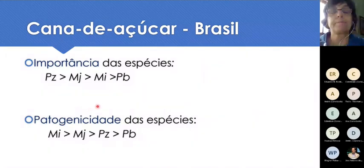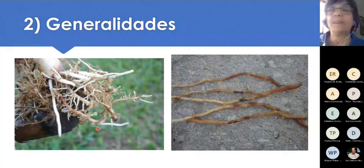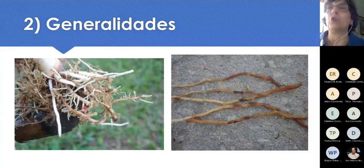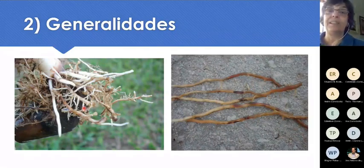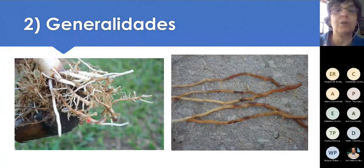Esses nematóides atacam o sistema radicular. Os nematóides do gênero Meloidogyne produzem galhas, que são deformações nas raízes, encontradas em todo tipo de raiz — nas emitidas pelo tolete e nas emitidas pelo perfilho. Mas nem sempre a gente encontra desse jeito. É até raro encontrar raízes de cana com sintoma tão nítido do ataque de Meloidogyne, com as galhas tão visíveis. Muitas vezes as galhas estão dentro das raízes grossas da cana e passam despercebidas. Então, podemos ter problemas com Meloidogyne mas não visualizar as galhas em cana.